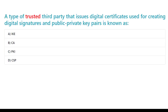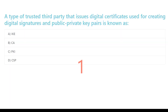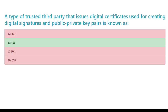A type of trusted third party that issues digital certificates used for creating digital signatures and public-private key pairs is known as: A. IKE. B. CA. C. PKI. D. CSP. The correct answer is B. CA.